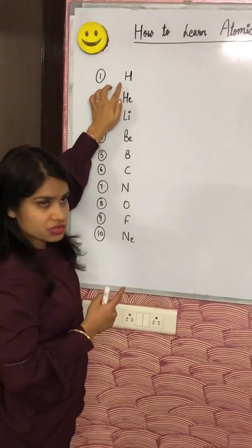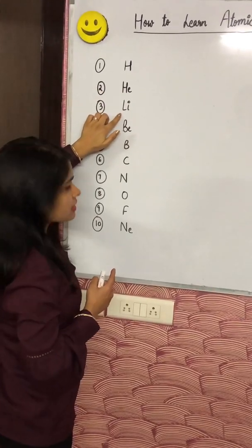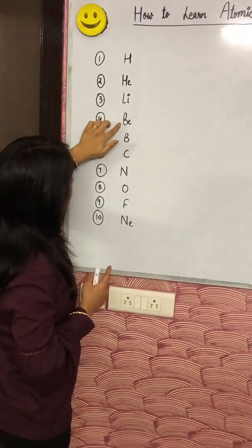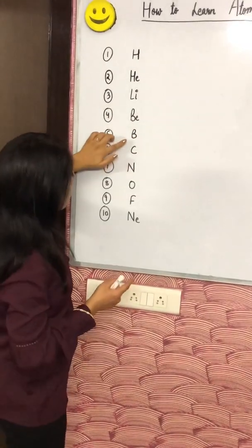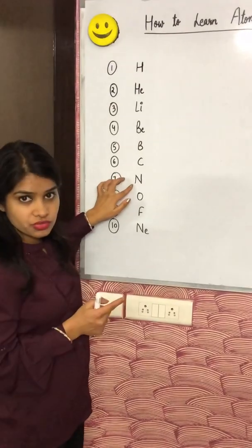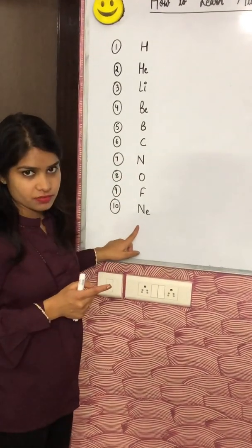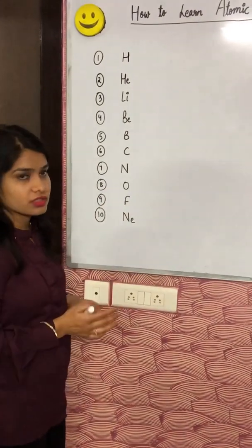H for hydrogen, He for helium, Li lithium, Be beryllium, B for boron, C for carbon, N for nitrogen, O for oxygen, fluorine, neon. So how can we learn this?